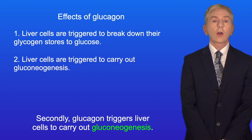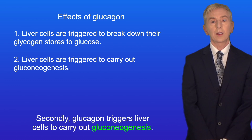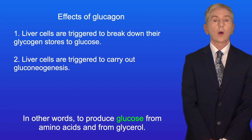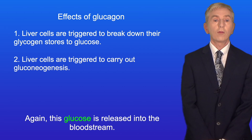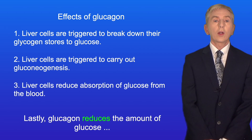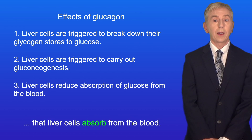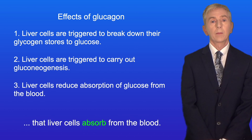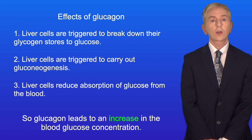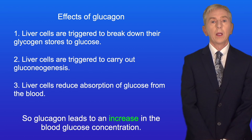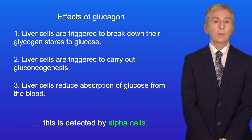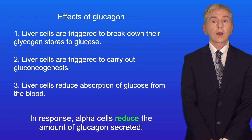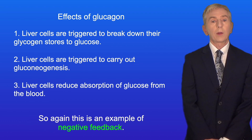Secondly, glucagon triggers liver cells to carry out gluconeogenesis — in other words, to produce glucose from amino acids and from glycerol — and again this glucose is released into the bloodstream. Lastly, glucagon reduces the amount of glucose that liver cells absorb from the blood. So glucagon leads to an increase in the blood glucose concentration. Once the blood glucose concentration increases, this is detected by alpha cells, and in response alpha cells reduce the amount of glucagon secreted — so again, this is an example of negative feedback.